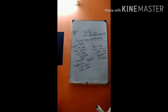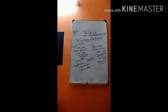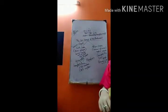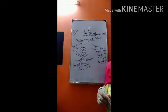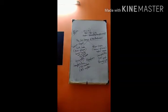Qualifications for becoming a member of the Rajya Sabha: He must be a citizen of India. He must not be less than 30 years of age. He must not hold any office of profit under the Government of India or state. He must not be bankrupt or of unsound mind.